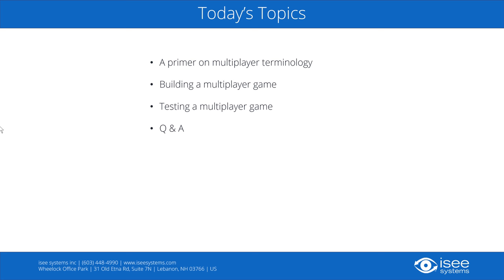Let's get into today's agenda. It looks pretty short — only four bullet points — but trust me, there's a good bit of meat in today's presentation. The first thing is a primer on multiplayer terminology, to get you up to speed on the vocabulary. From there, we'll actually go ahead and build a multiplayer game using the interface window in Stella Architect. Then we'll cover testing multiplayer games, which is pretty interesting — how do you pretend to be multiple different people? Finally, we'll leave about 15 minutes at the end for questions and answers.